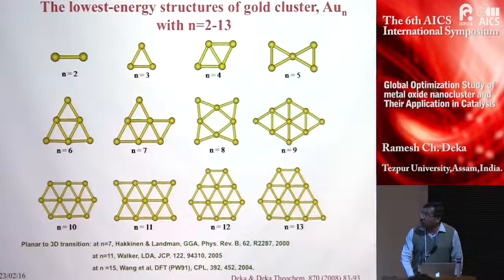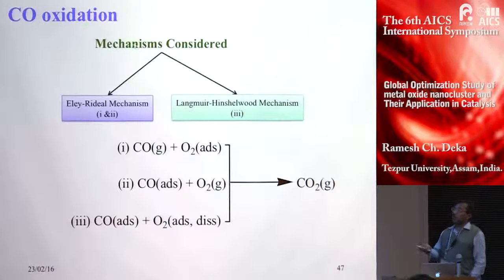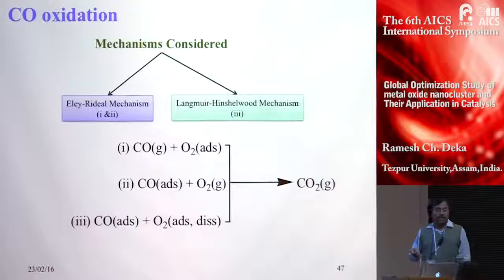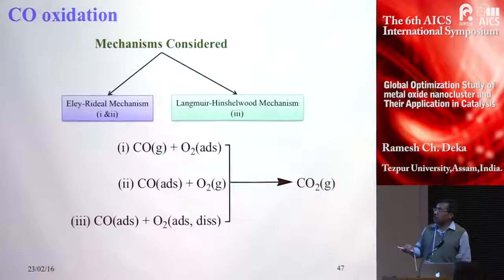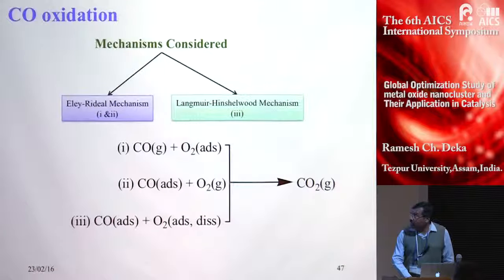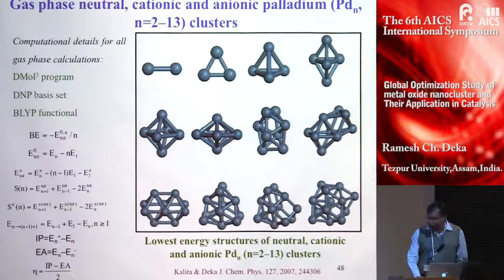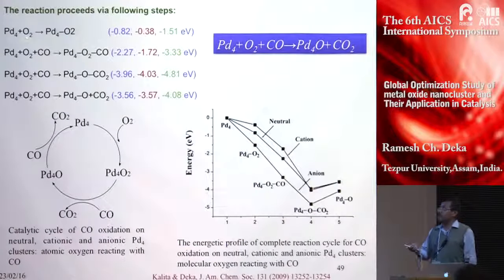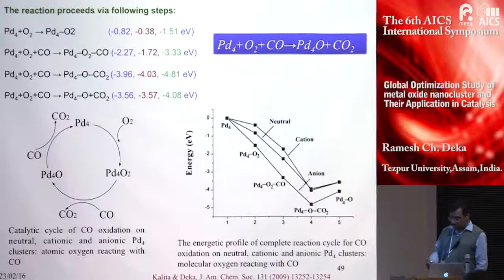We study gold nanoclusters and their properties, using those nanoparticles for removal of carbon monoxide — a major air pollutant. Professor Haruta of Japan was the pioneer in developing gold nanoparticles for removing CO and was the first to do experiments on CO oxidation using metal nanoclusters. We studied the reaction mechanism and also optimized palladium nanoparticles at the DFT level, proposing mechanisms for how cationic, anionic, and neutral palladium clusters can catalyze CO oxidation.